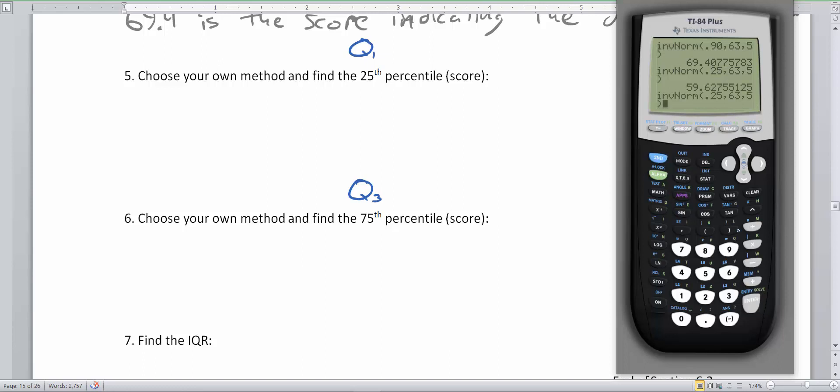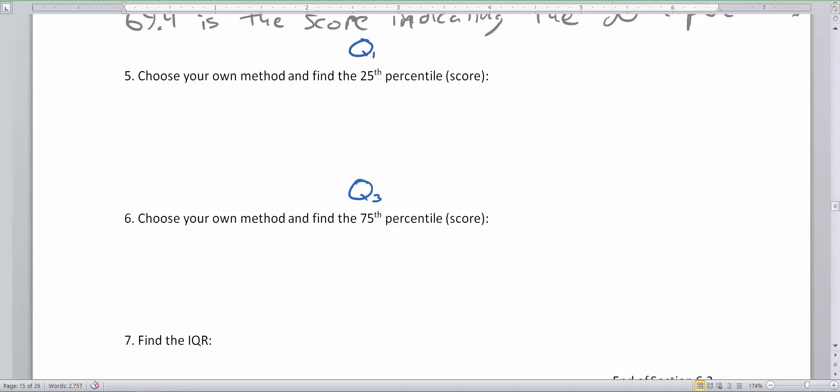And if I hit second enter, and I click the arrow back, and I change this to 0.75, then I have the third quartile. So I'm going to write these down. So the 25th quartile, inverse norm of 0.25 comma 63 comma 5 is equal to 59.6.